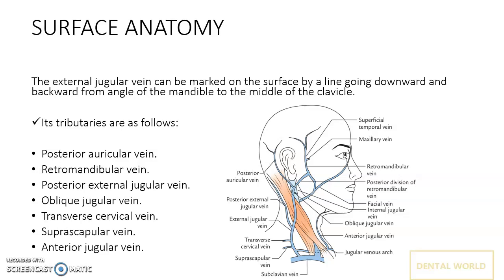There are various tributaries of the EJV. The two main tributaries are the posterior auricular vein and the retromandibular vein, from which it actually starts. There are also other tributaries: the posterior external jugular vein, the oblique jugular vein, the transverse cervical vein, the suprascapular vein, and the anterior jugular vein. You have to memorize all these tributaries from an examination point of view — they are very important.